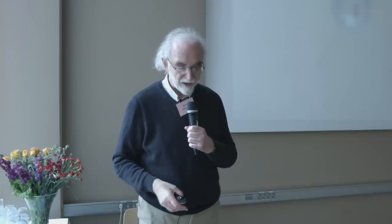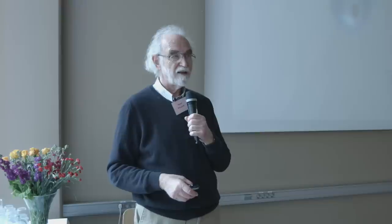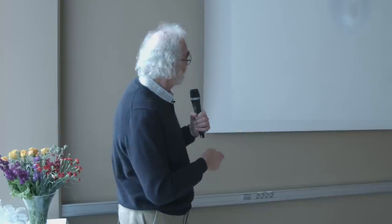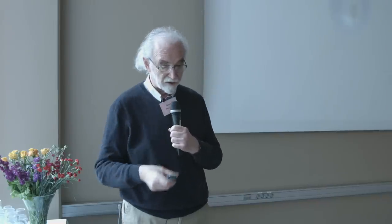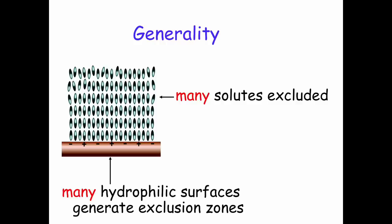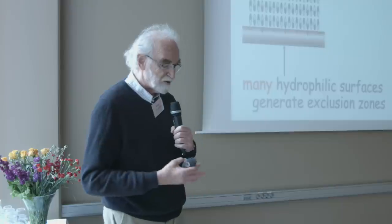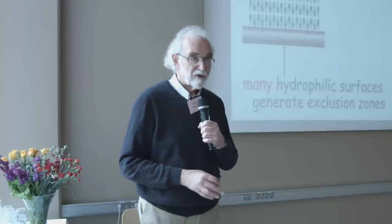Another example: chia seeds. We tried chia because of its remarkable hydration properties, wondering whether it shows the same exclusion. Here's the seed, and here's a droplet of water containing blue Evans dye. You can see a clear exclusion zone around the seed, which is actually quite big. Chia has an enormous capacity to generate this kind of exclusion zone. To summarize: many hydrophilic surfaces generate exclusion zones, and many solutes are excluded. That's the answer to question one.